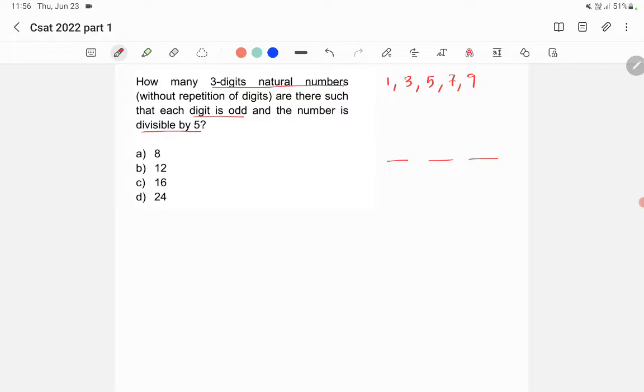So if the number is divisible by 5, the last digit will be either 5 or 0. We cannot use 0 because it will become an even number. So the last number will be 5.